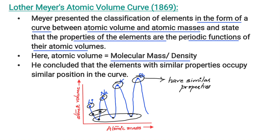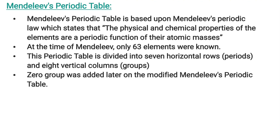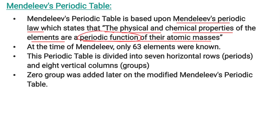This is how Lothar Meyer classified the elements. Another important attempt was made by Mendeleev, who classified elements into a periodic table based on Mendeleev's Periodic Law. This law states that the physical and chemical properties of the elements are the periodic functions of their atomic masses, meaning certain properties repeat after a certain interval. At the time of Mendeleev, only 63 elements were known, and he classified them into 7 horizontal rows and 8 vertical columns.